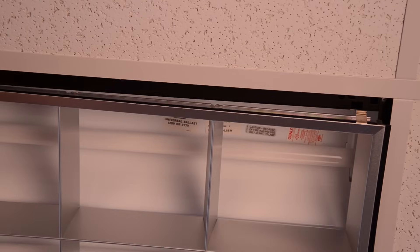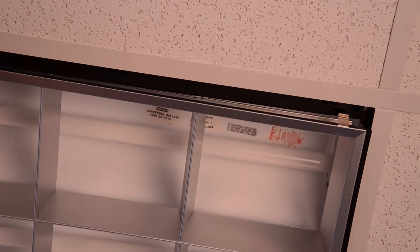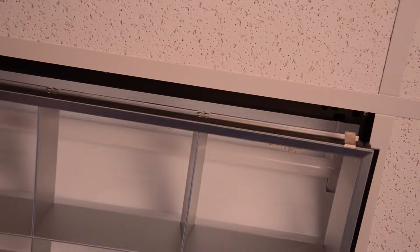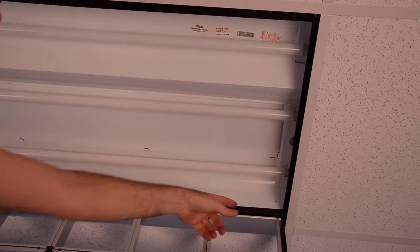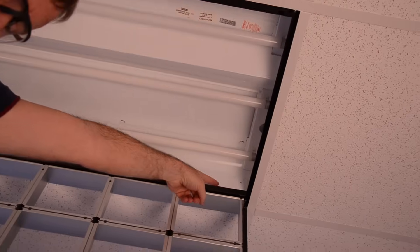So releasing the fixture louvers is pretty simple. There's a release on each end. And usually it just swings down like so. They're also made that you can remove the hinge part and take the whole louver off and clean it if you need to.